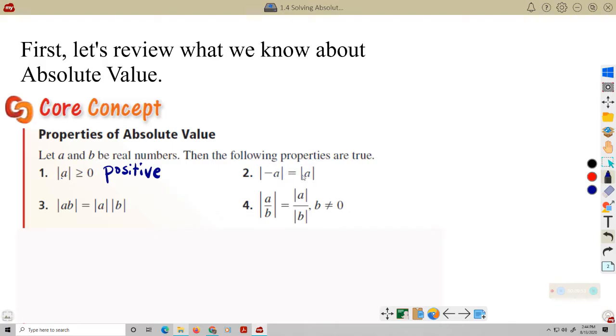Number two. Absolute value of negative A equals the absolute value of A. What does that mean? It means opposites have the same absolute value. We know that the absolute value of negative 3 equals 3, and the absolute value of 3 is also 3.